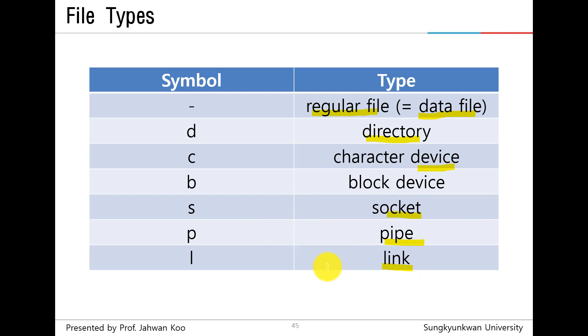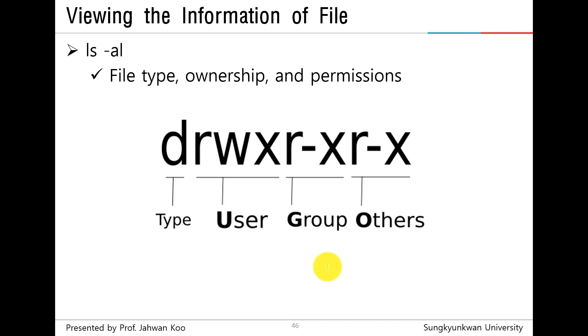As you know, we can view the information of a file by typing the ls command. The ls command displays file type, ownership, and permissions. Let's see the example. From the left side, we can read d rwx r-x r-x.